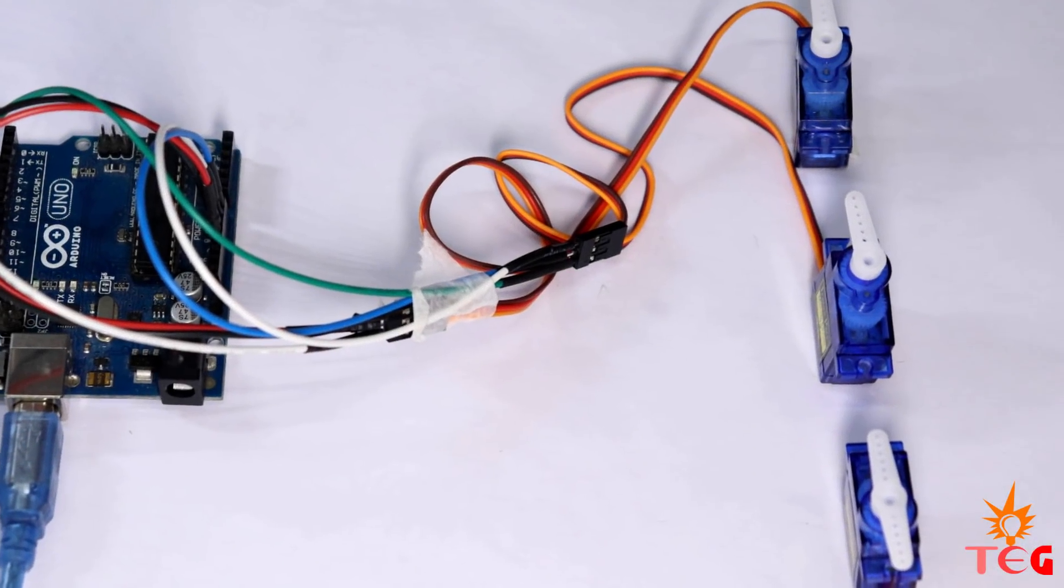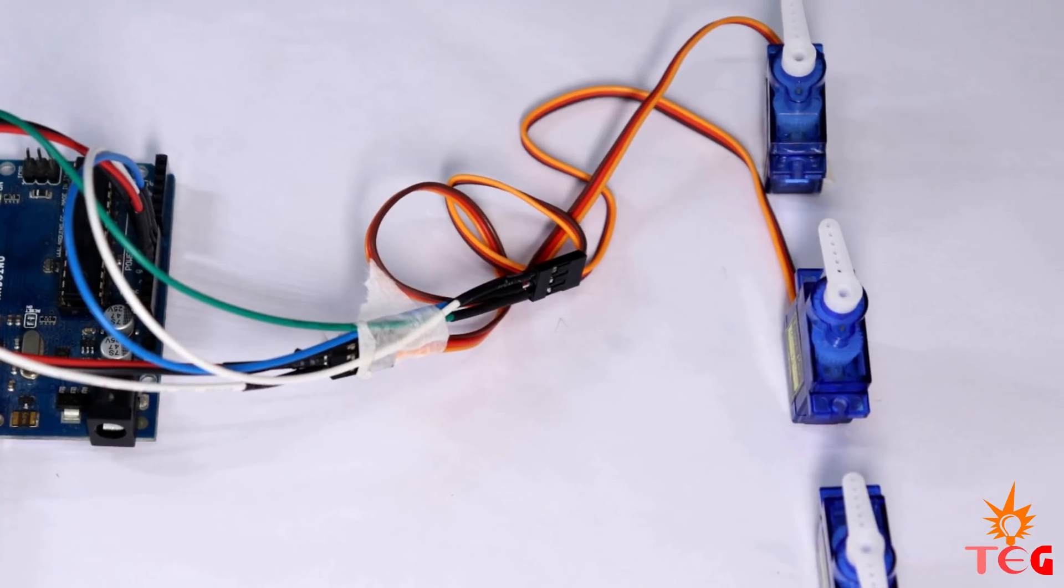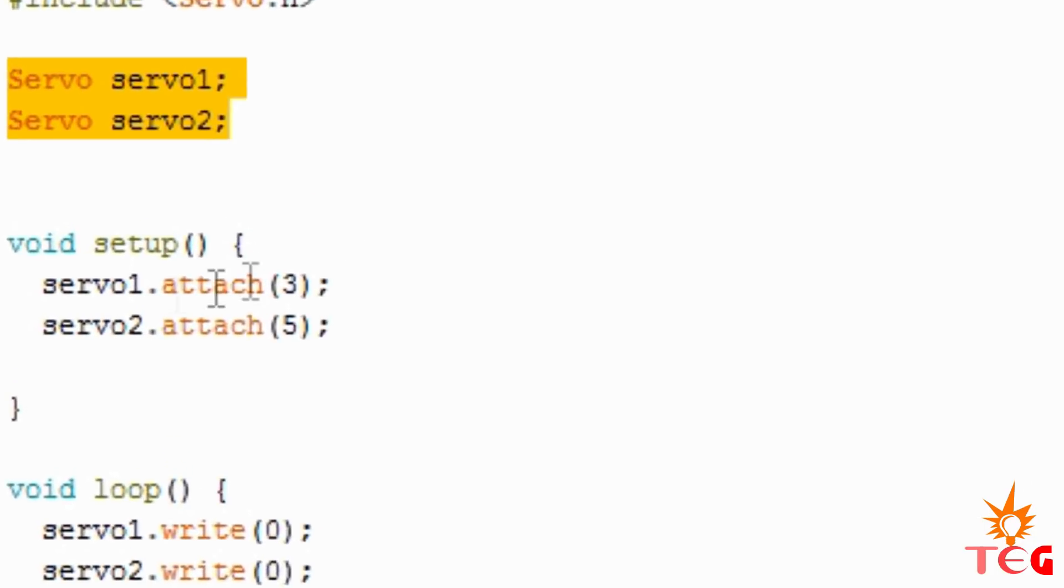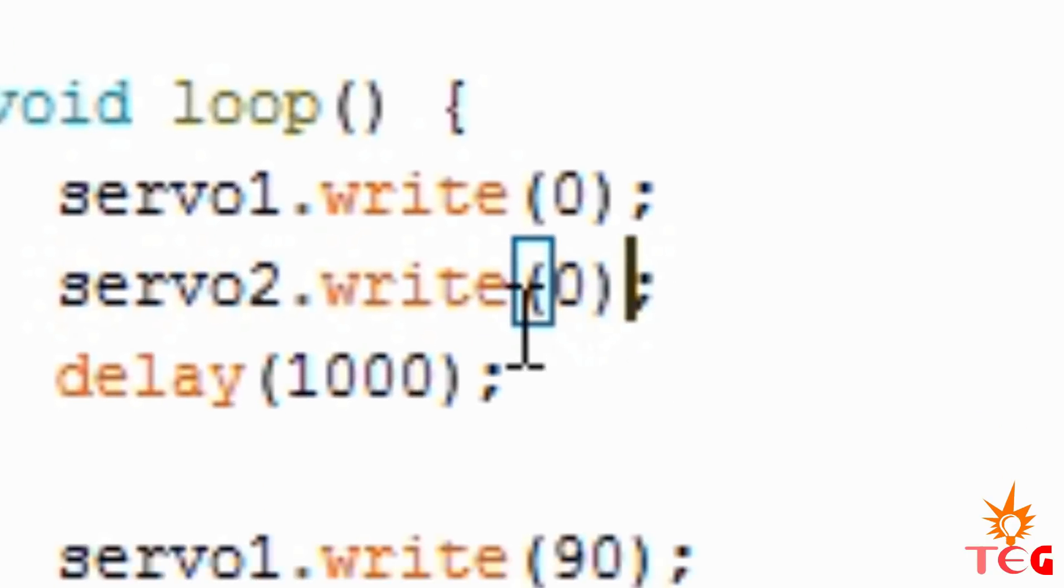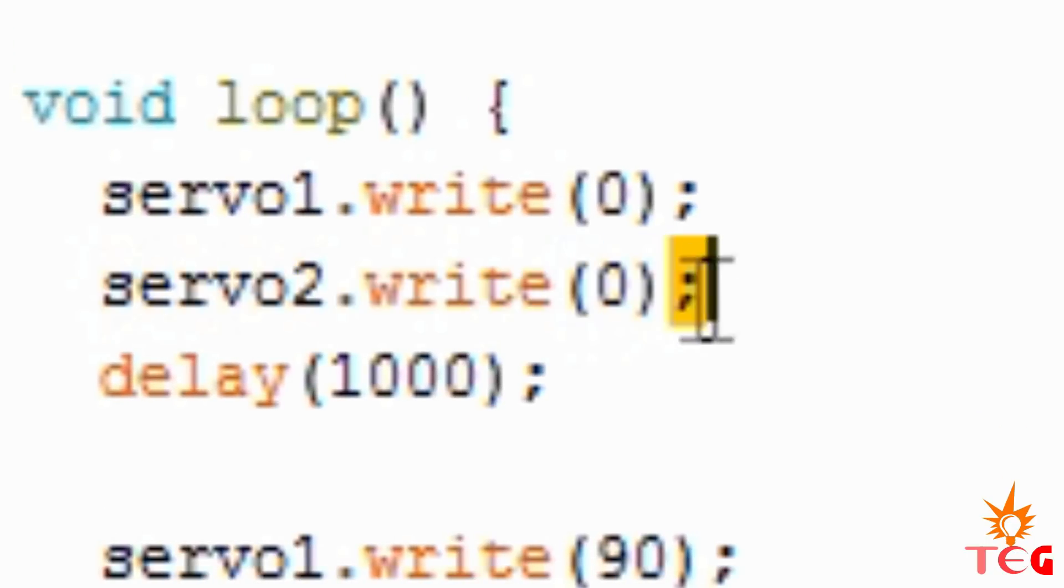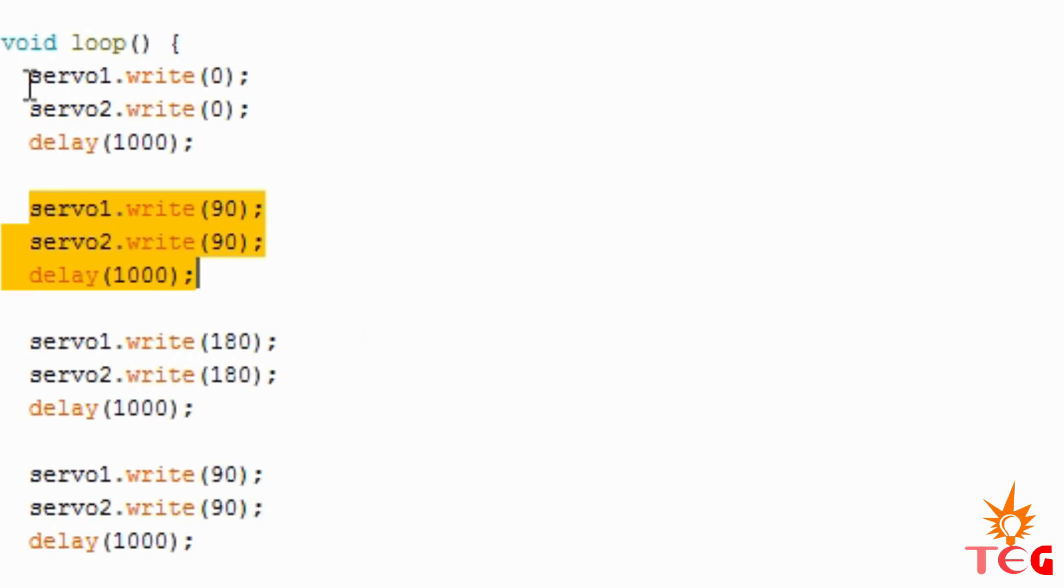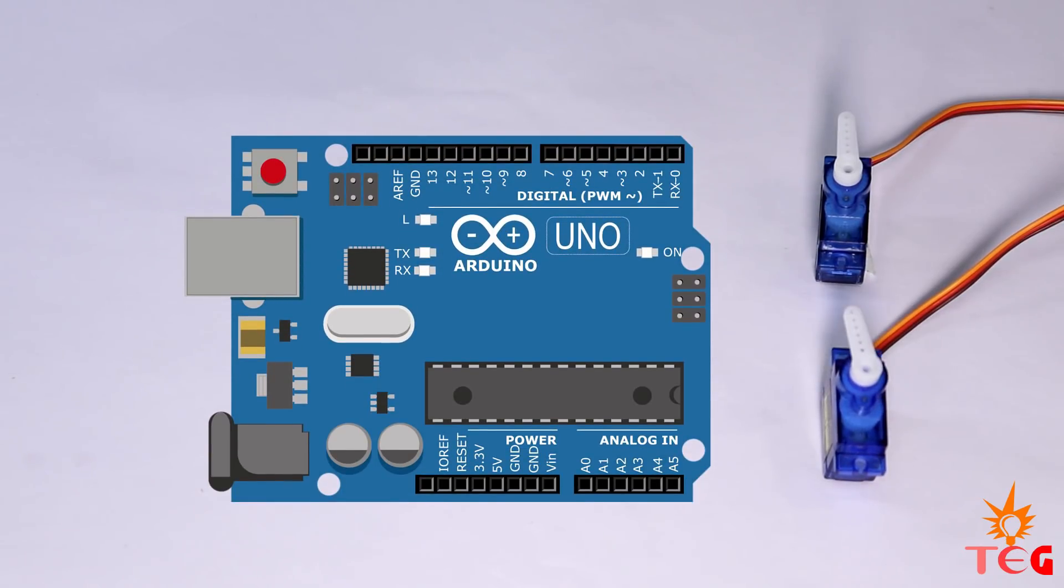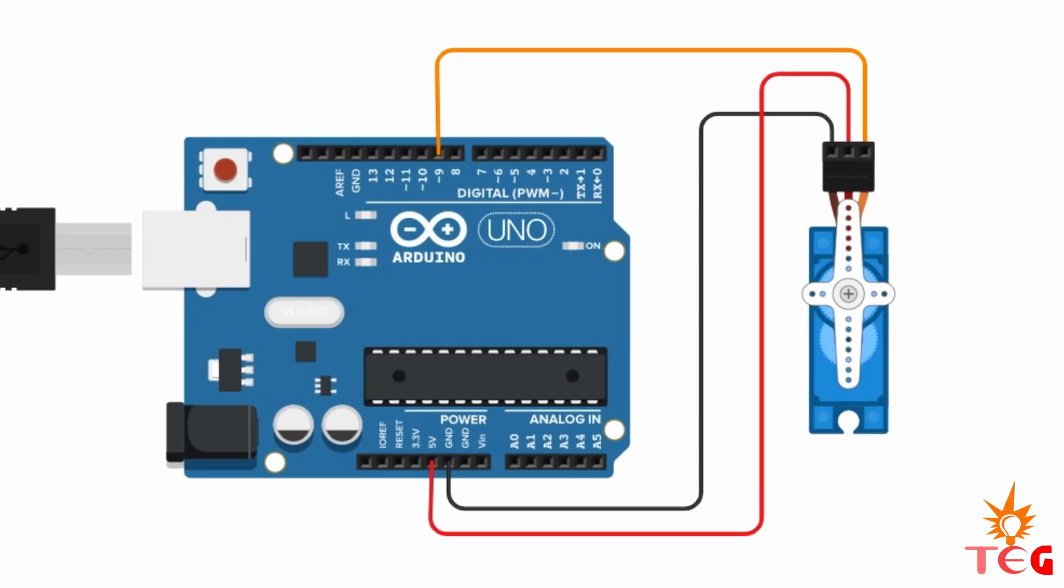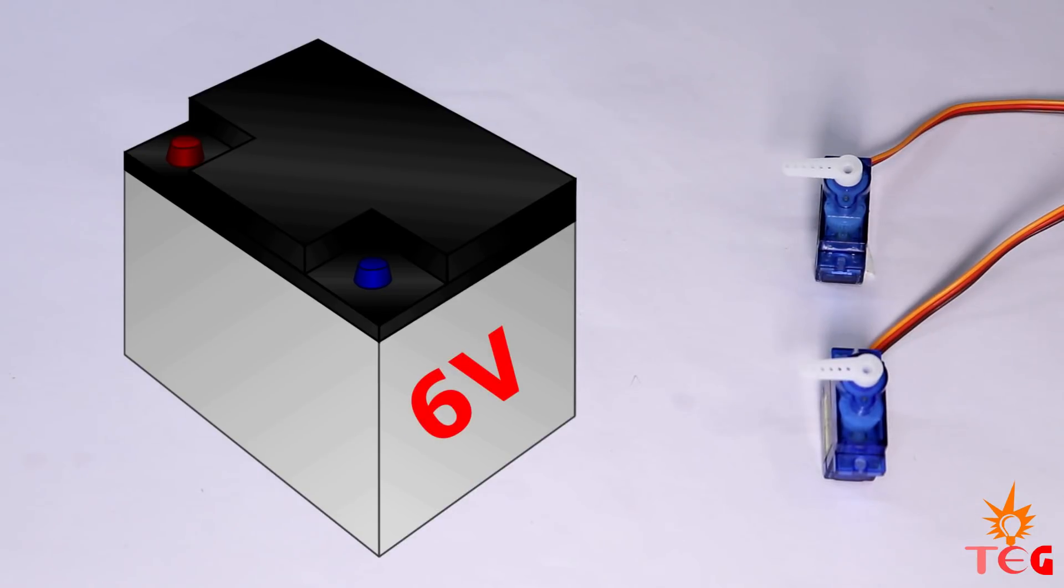So running more than one servo motor using Arduino and servo motor library is also very easy. All you have to do is just define the pin number on which signal pin of the motors are connected. After that, in void loop, just use the code servo.write as explained earlier to rotate the motors to the required position. Here I'm running two servo motors using one Arduino. You can run as many as you want, but make sure if you're running more than two motors, then don't use Arduino to supply power to the servo motor or don't connect the power pin of servo motors to Arduino. Use a separate 6 volt battery to power it because Arduino cannot provide enough current to more than two motors. So always use separate 6 volt power supply to run your servo motors.